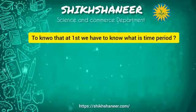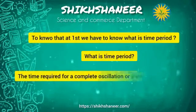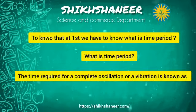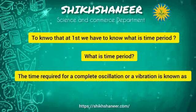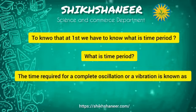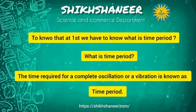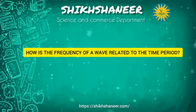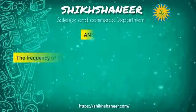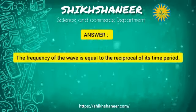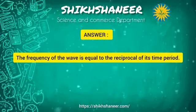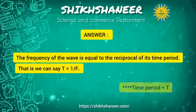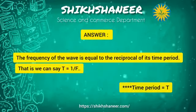How is the frequency of a wave related to the time period? First, what is time period? The time required for one complete oscillation or vibration is known as the time period. The frequency of a wave is equal to the reciprocal of its time period, that is, f = 1/T.